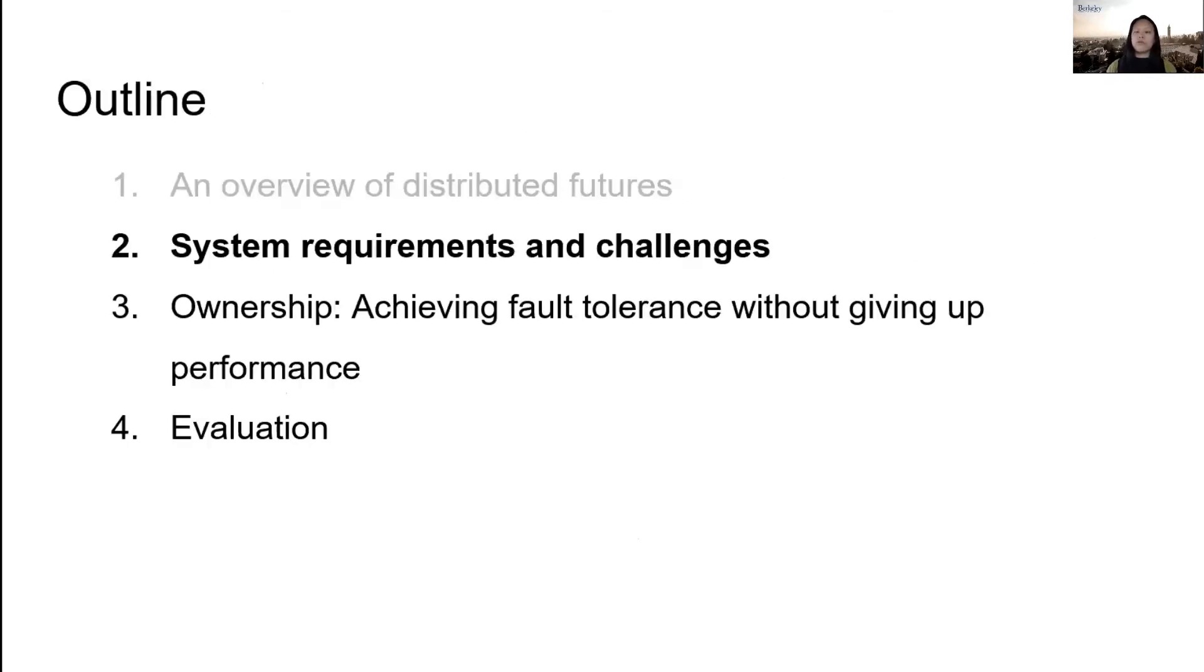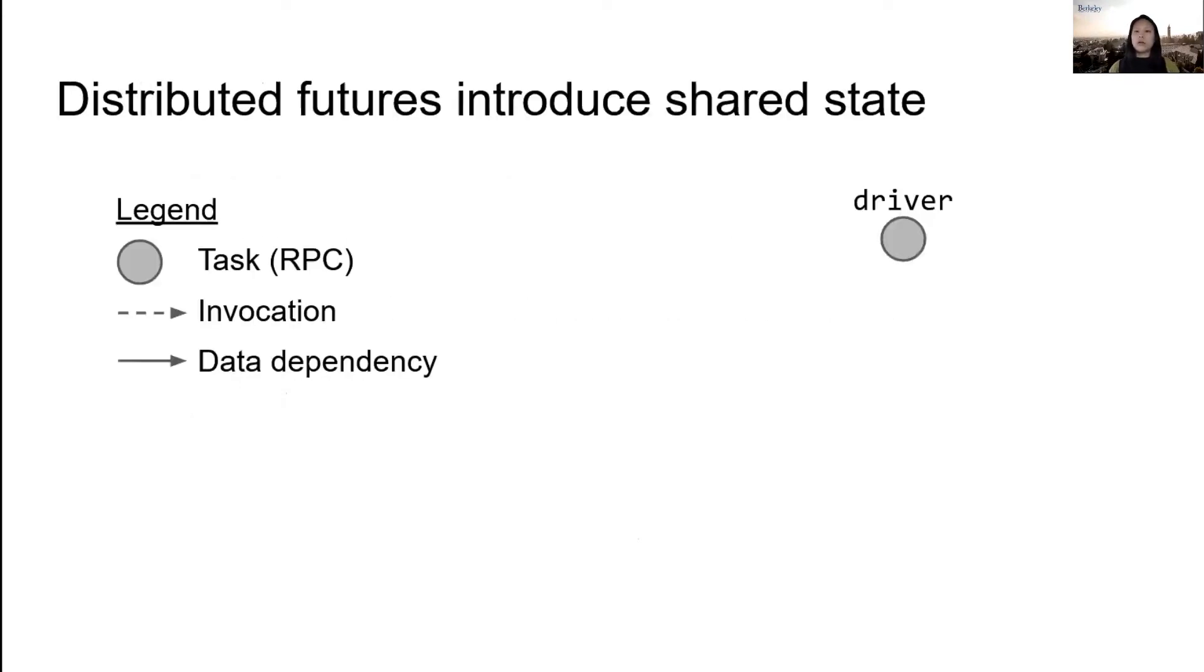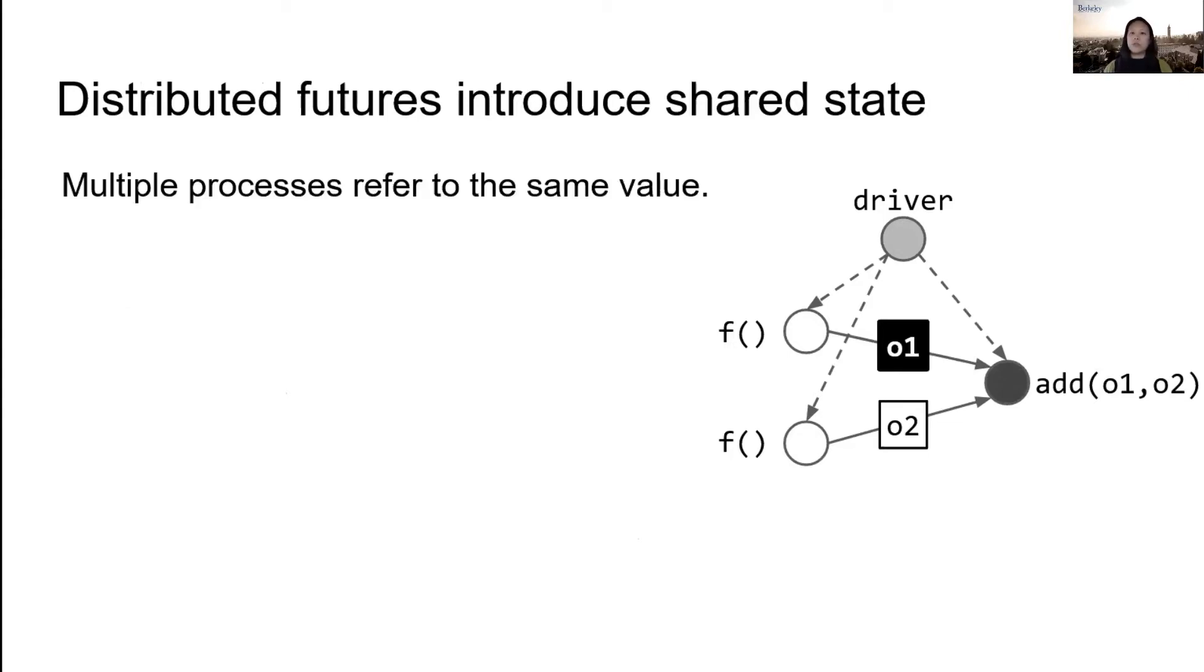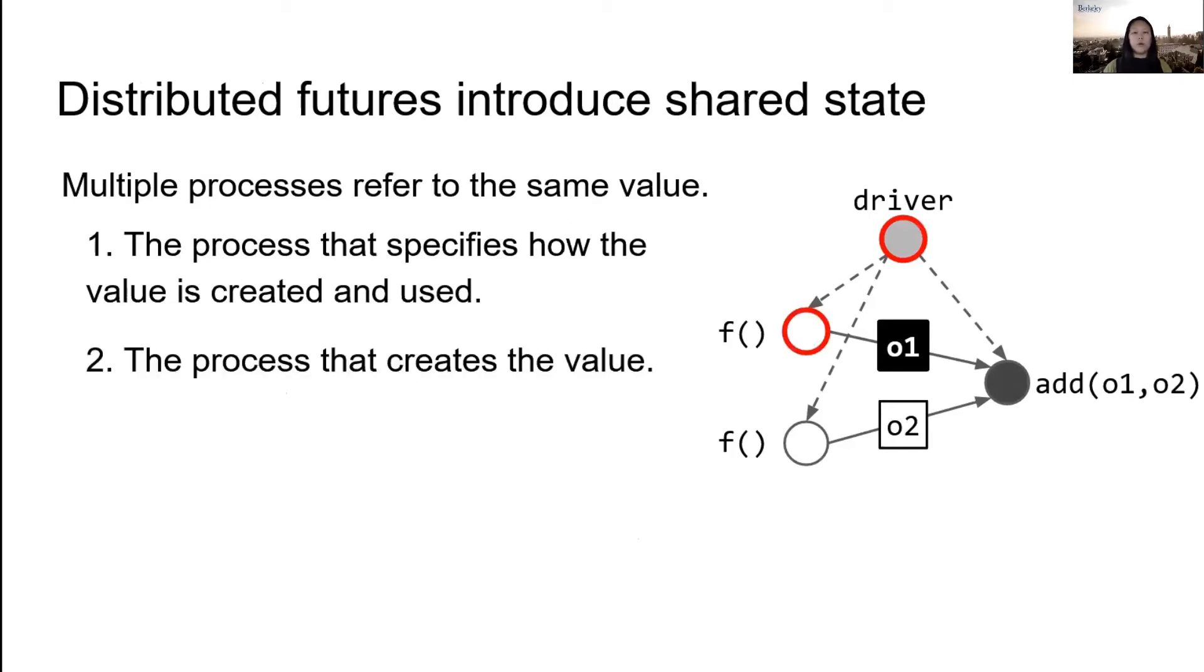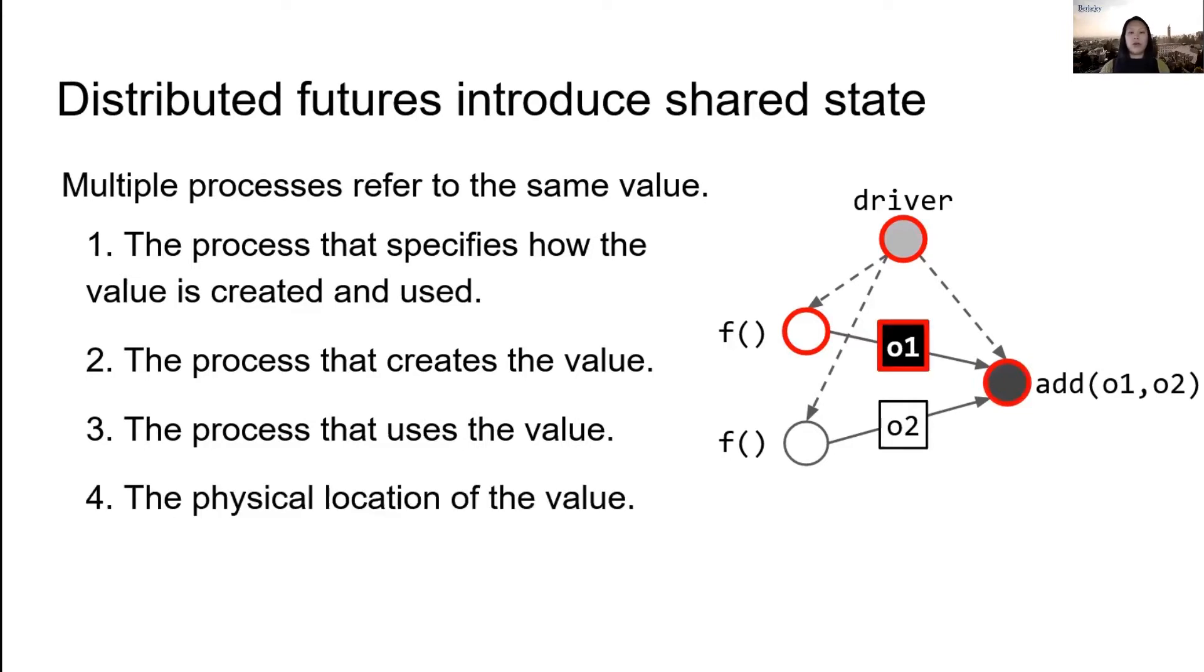The potential of distributed futures is huge, but realizing this at scale and in the presence of failures is challenging. To see why, let's consider the example from earlier where we had a driver that submitted two tasks and then passed their results to an add task. The fundamental problem is that a single value can now be shared by multiple processes. Take o1 for example. This object is referred to by several processes: the driver that specifies how to create and use it, the worker that creates the value, the worker that uses the value, and the physical location of the value. All of these may be distinct and distributed processes. While making the object immutable simplifies the problem, still, if we want to ensure that a reference holder can always dereference a value, we need to coordinate these processes.